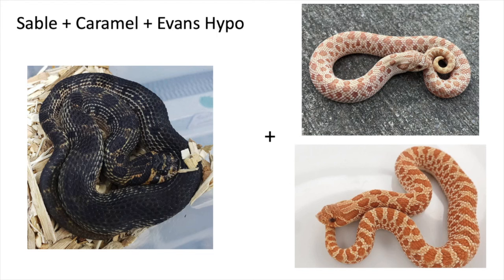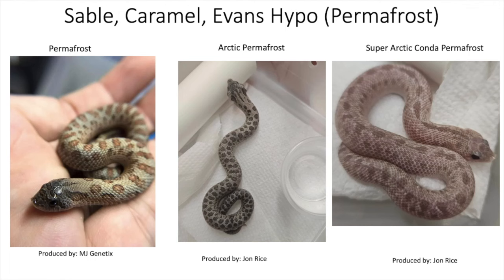The next combination is sable, caramel, and Evans hypo, called the permafrost. I have three different permafrost examples on this slide: the regular permafrost on the left, the arctic permafrost in the middle, and then on the right what possibly is a super arctic permafrost conda. John Rice isn't sure if that's exactly what it is — it could be other genes in play — but that's what he's thinking it may be, and he'll have to prove it out.